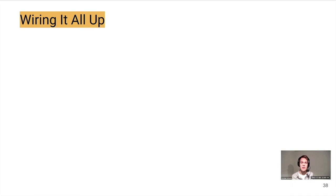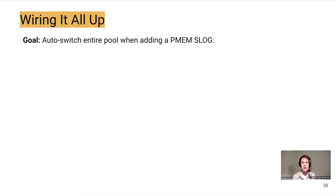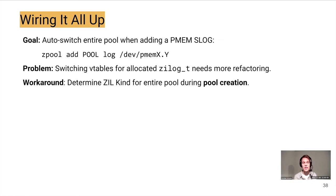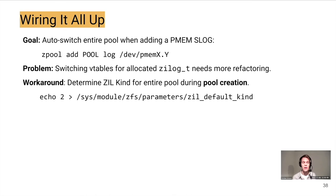The next step was to wire all this into a prototype for actual benchmarks. The goal was to automatically activate PMEM when adding a PMEM slog device. The problem is that when a pool is already instantiated, we'd have to switch vtables while they are potentially in use, which I didn't have time to cover in the thesis. The workaround was to determine the ZIL kind ahead of time when creating the zpool using a module parameter.